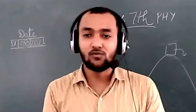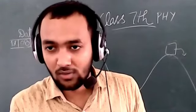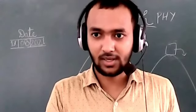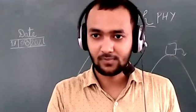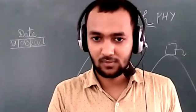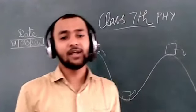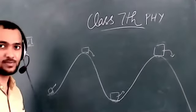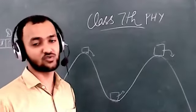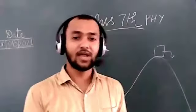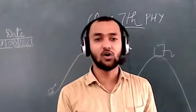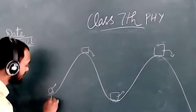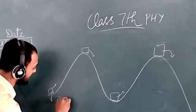The law of conservation of energy states that energy can neither be created nor destroyed — only the form of energy changes. In the roller coaster, when the car is at the lowest point (ground level), which energy is maximum — potential or kinetic?